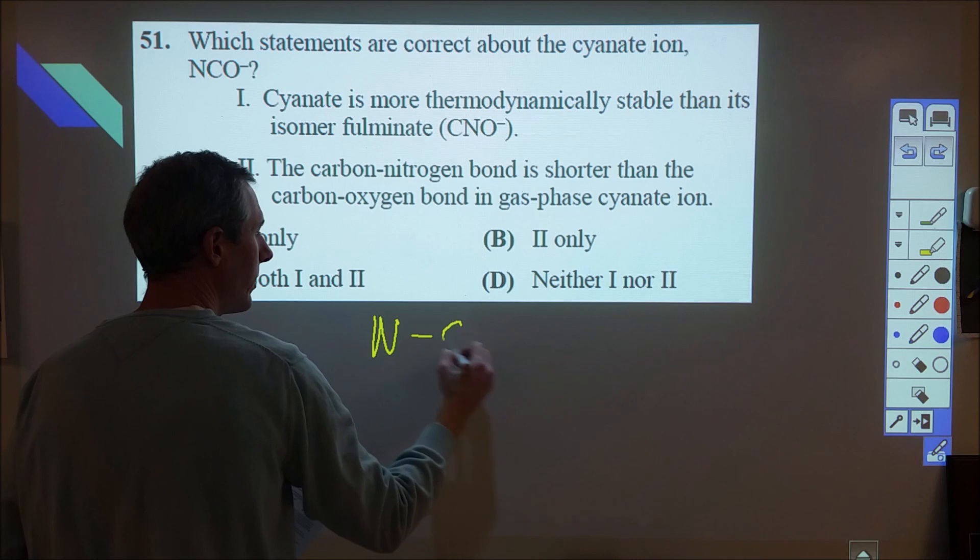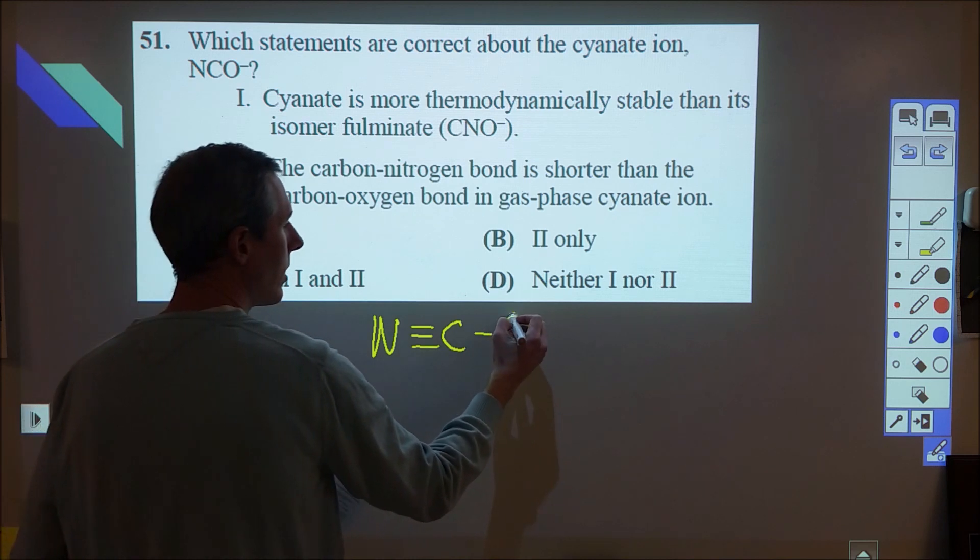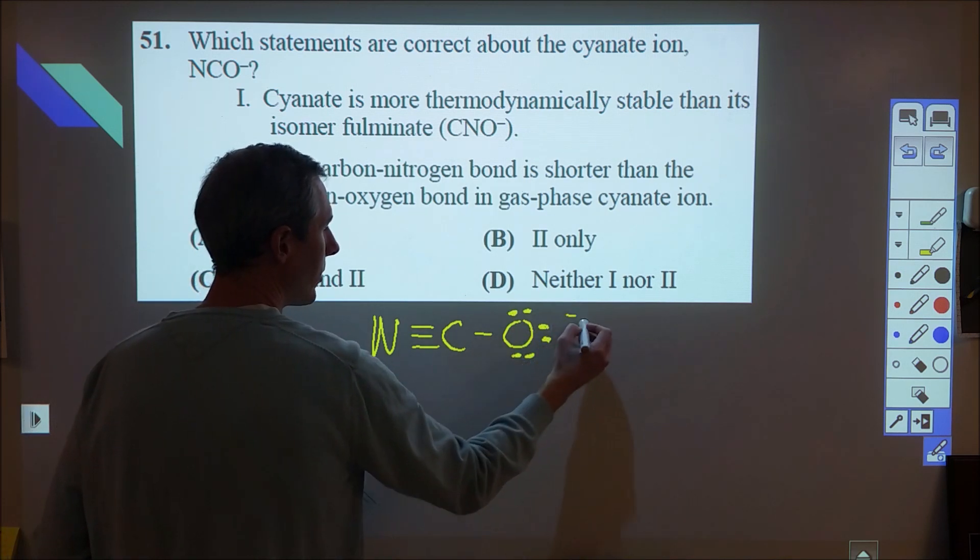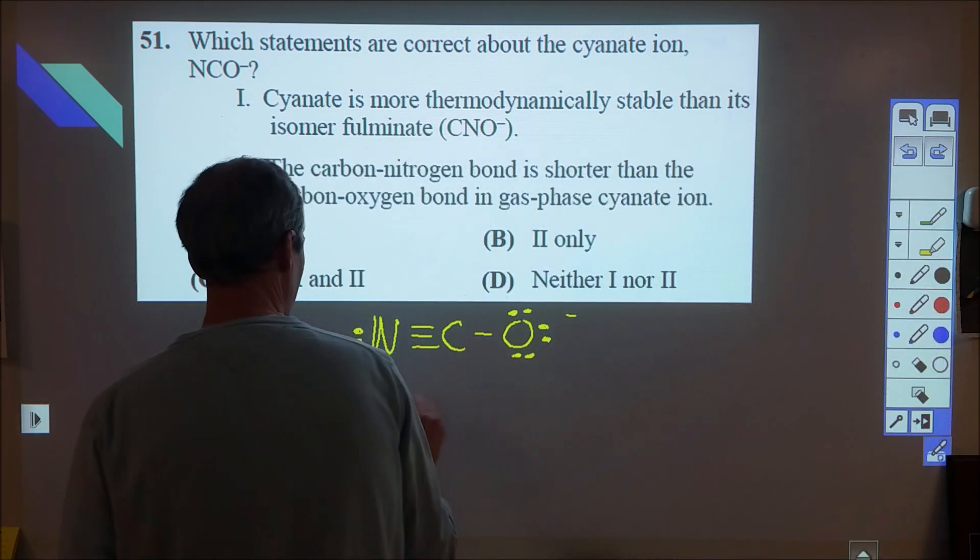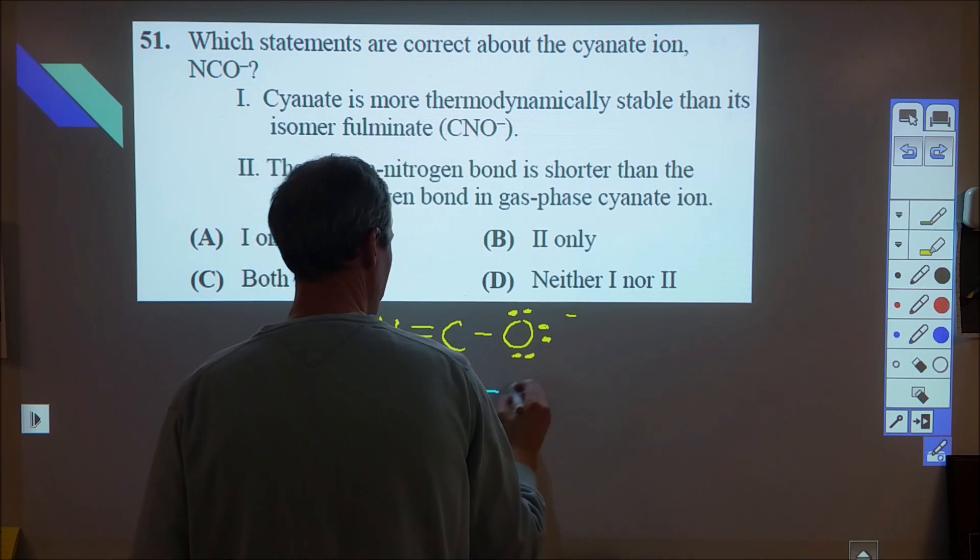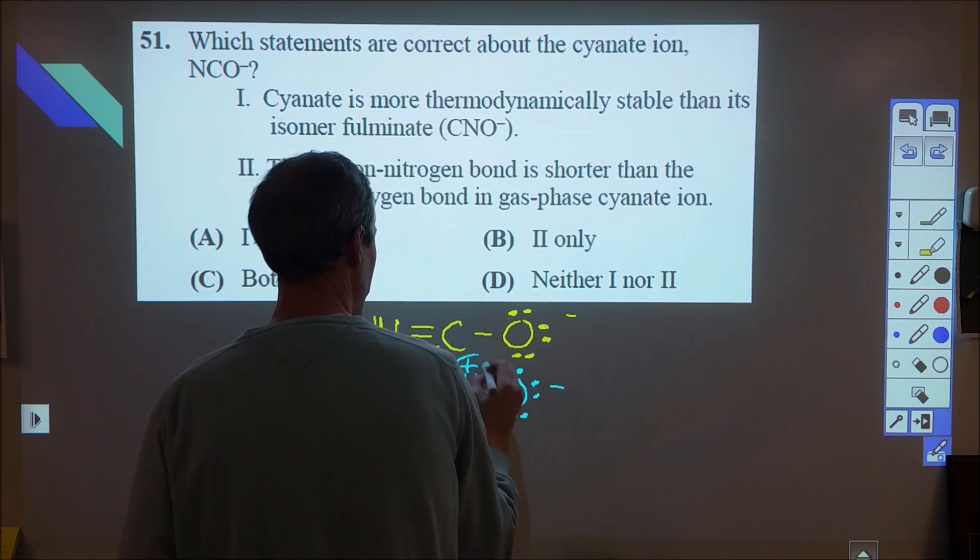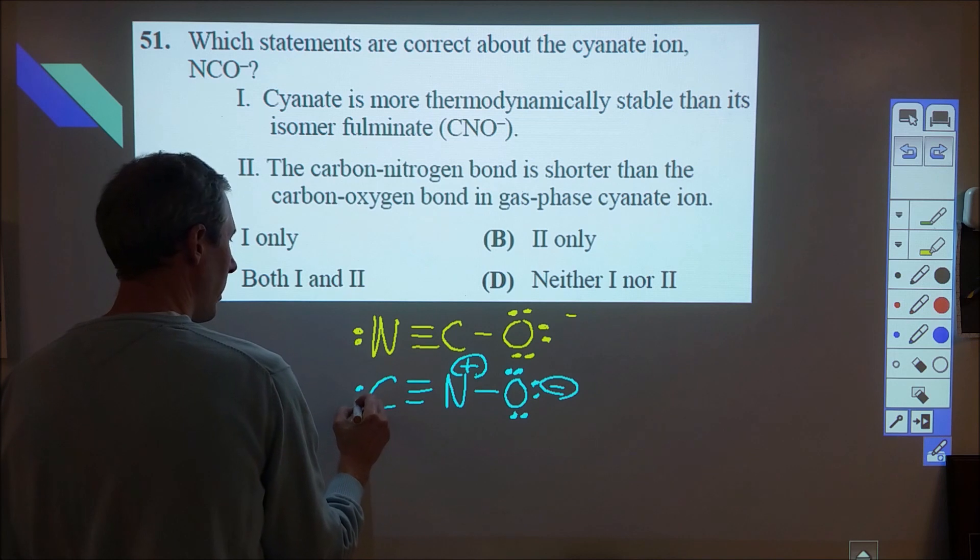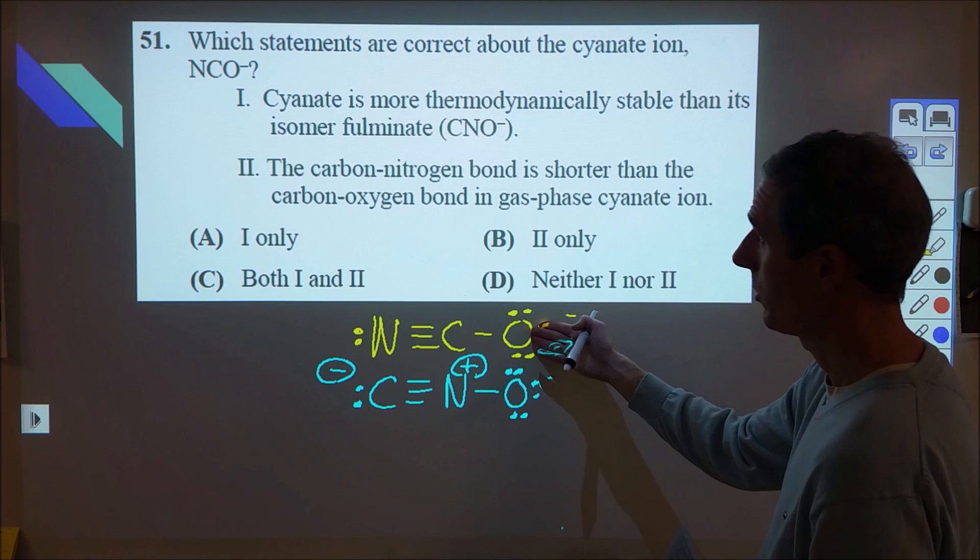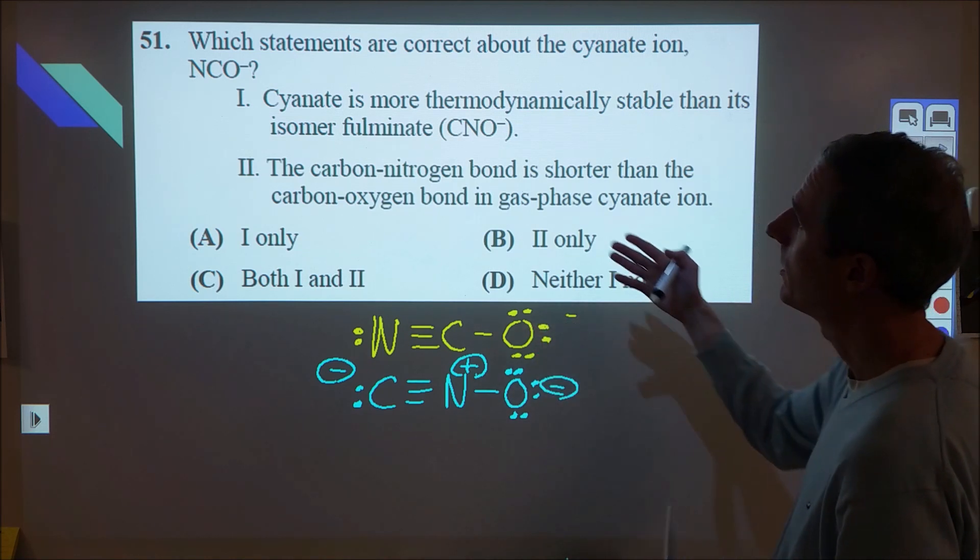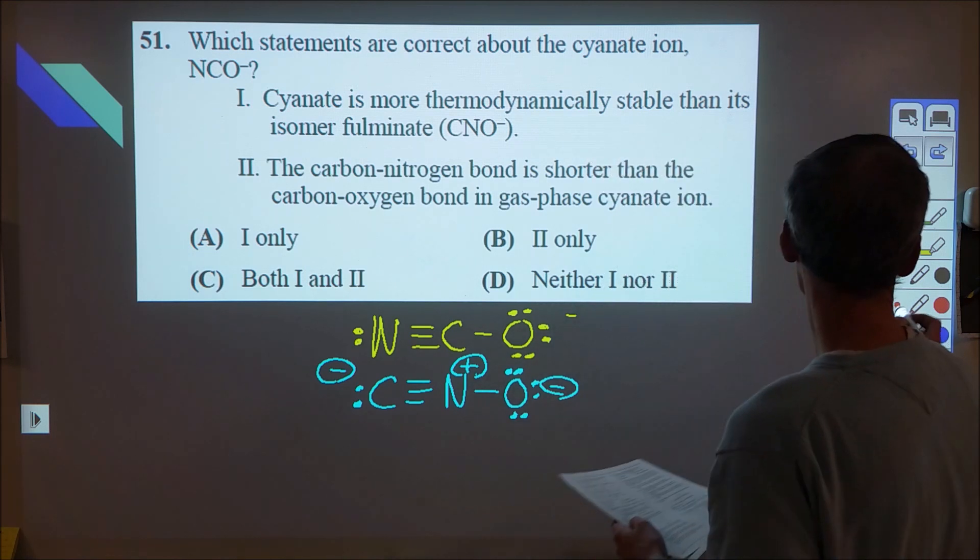So if we look at that, having the carbon in the middle means that we're going to end up with a triple bond to the nitrogen and a single bond to the oxygen. That's going to give us a negative formal charge on the oxygen. That's problematic because that ends up putting an extra formal charge on both the carbon, which is not a great place for it, and the nitrogen. So obviously this is a better structure or more stable structure. So then it says that the cyanate is more thermodynamically stable than the other isomer. That is, of course, true.